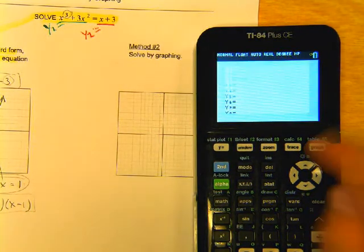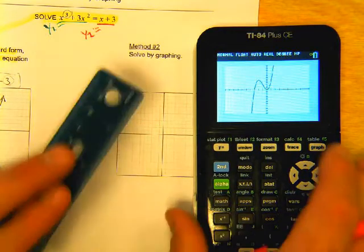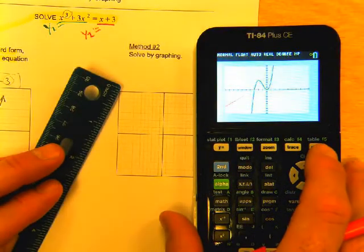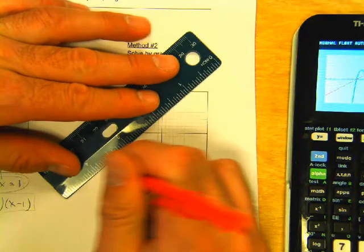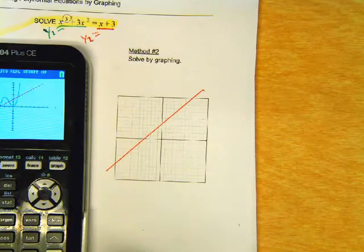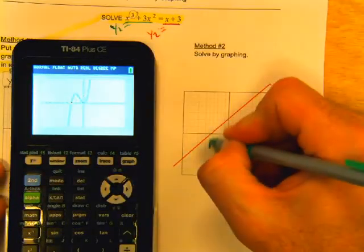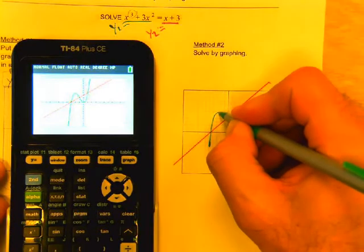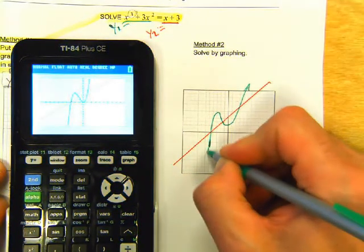And then you can press your graph button and just draw a rough sketch. It doesn't have to be exact, but just draw a rough sketch. I'm going to put it over there. There we go. And it looks kind of like that.